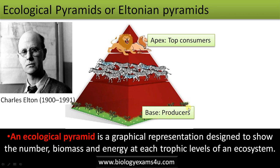The producers form the first trophic level, herbivores form the second trophic level, and the top consumers form the third trophic level in this example.